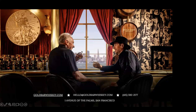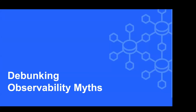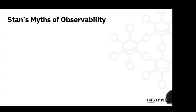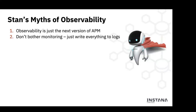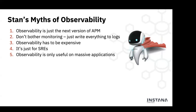Now we get back to what everyone really wants — talking about observability. We're going to cover Instana's six myths of observability. Myth one: observability is just the next version of APM. Myth two: don't bother monitoring, just write everything to logs. Myth three: observability has to be expensive. Myth four: it's just for SREs or site reliability engineers. Myth five: observability is only useful on massive large applications. Myth six: you can build it yourself.